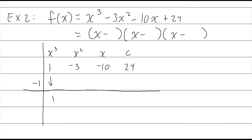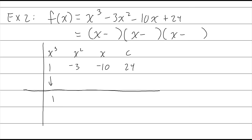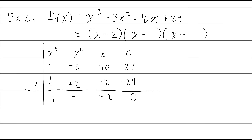Let me try negative 1. Bring down the first 1; 1 times negative 1 is negative 1; negative 3 minus 1 is negative 4; negative 1 times negative 4 is positive 4; negative 10 plus 4 is negative 6; negative 1 times negative 6 is positive 12. That's not going to give me a zero for my remainder either, so backtrack. What about 2? Bring down the 1; 2 times 1 is 2; negative 3 plus 2 is negative 1; 2 times negative 1 is negative 2; negative 10 minus 2 is negative 12; 2 times negative 12 is negative 24; 24 minus 24 is zero. I found my first zero, so x minus 2 goes in the factored form.